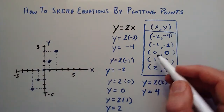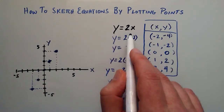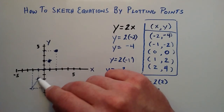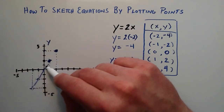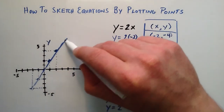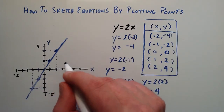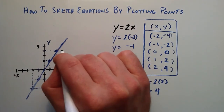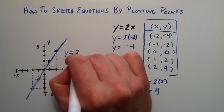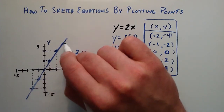Now that we've plotted all five points that satisfy this equation, let's connect the dots. Connecting the dots, we see that we have represented a line. So y equals 2x is a line, and when you represent it in the x-y coordinate system, it looks like the line we've drawn here.